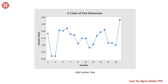Next we draw a center line. The mean of the 20 subgroup standard deviations is 1.237. We call this value S-bar and plot our center line here. This is our estimate of within-subgroup variation.